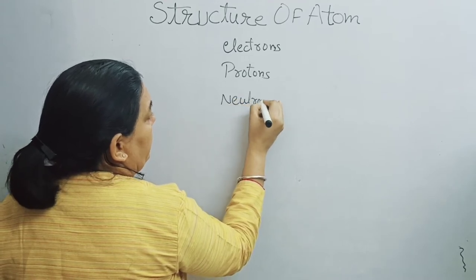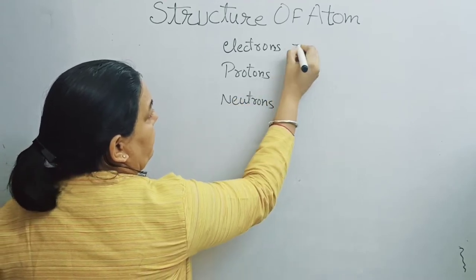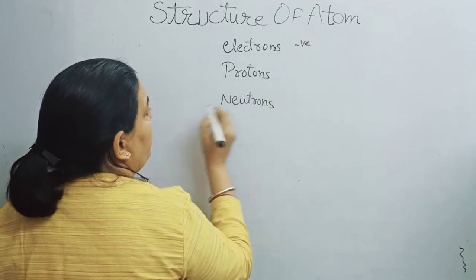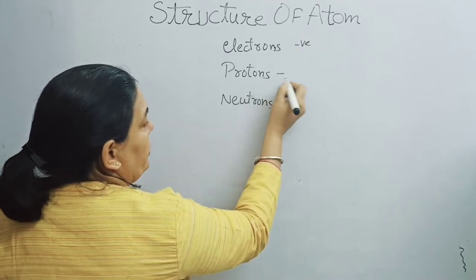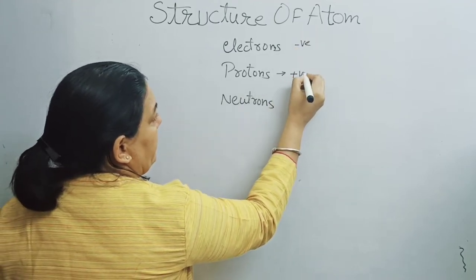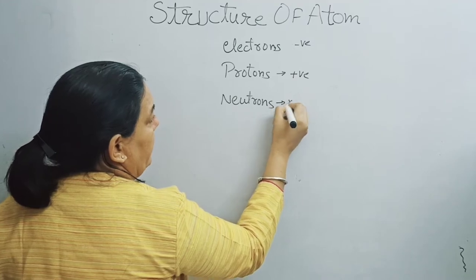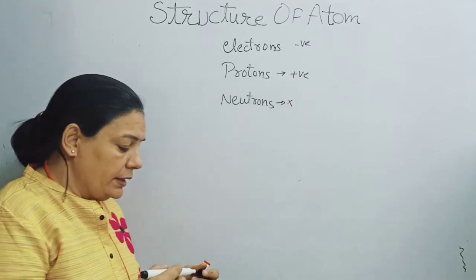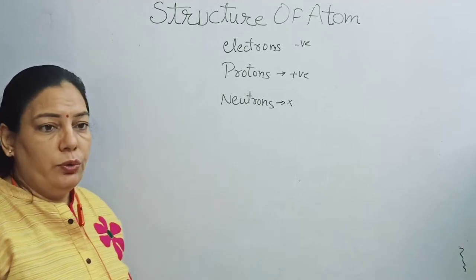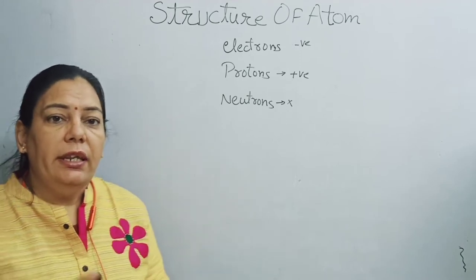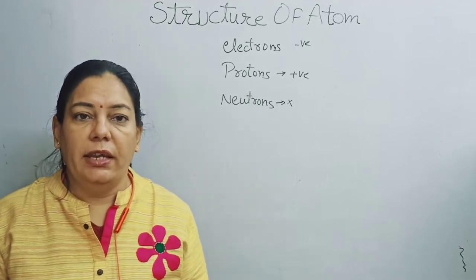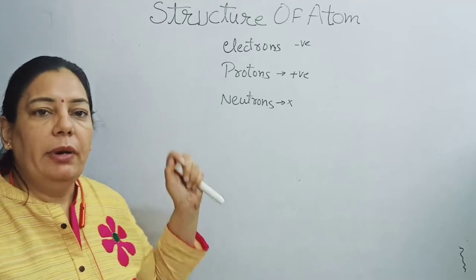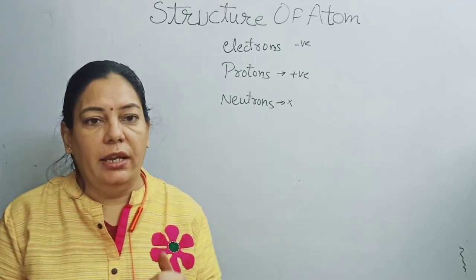Electrons carry one unit of negative charge, whereas protons are positively charged particles. Neutrons do not carry any charge. So, with the discovery of electrons and protons, the next problem in front of scientists was: how are these subatomic particles arranged in an atom?